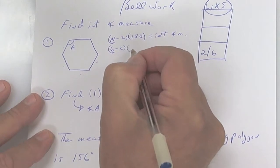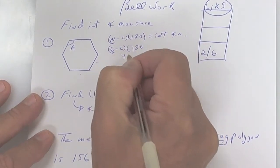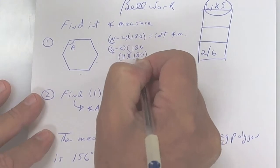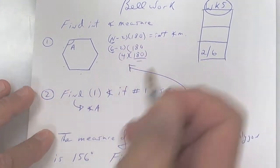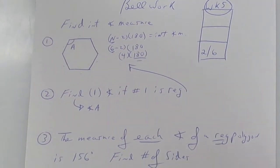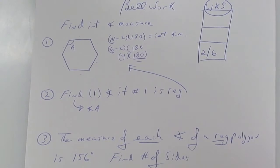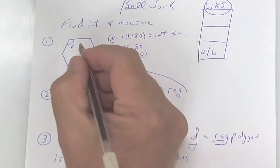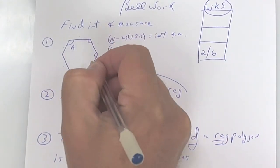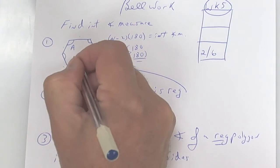That gives you 4 triangles. Each triangle is worth 180 degrees, so take your calculator and do 4 times 180 — that gives you 720. So the interior angles, if you add all of them up, would be 720 degrees.